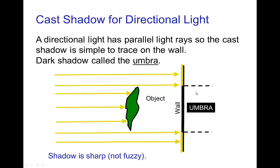That is, the object either blocks a light ray or it doesn't block a light ray, and so the wall is either in shadow in some parts, which is the umbra, or not at all in shadow and is uniformly bright everywhere else. Also the shadow is sharp.